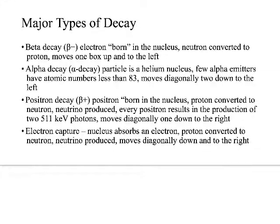The major types of decay are beta decay — sometimes called beta negative. One way to think about this is an electron is born from the nucleus: beta born, beta negative. In that process, a neutron is converted into a proton. If you think about a neutron as almost like an electron married to a proton and they canceled each other out — when beta negative decay occurs, that neutron gives off the electron and, in consequence, becomes a proton.